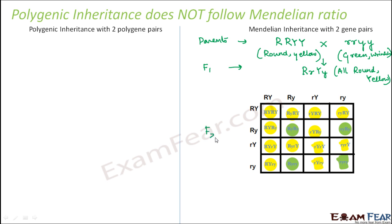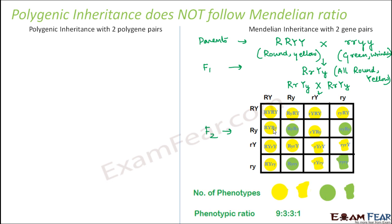In the F2 generation, capital R, small r, capital Y, small y was self-bred. These were the possible gametes, and when they were crossed, these were the possibilities. In the F2 generation also, there are no intermediates found. You either found round yellow seeds, green wrinkled seeds, green round seeds, or yellow wrinkled seeds — four possibilities in total. So the number of phenotypes you could obtain were only these four.